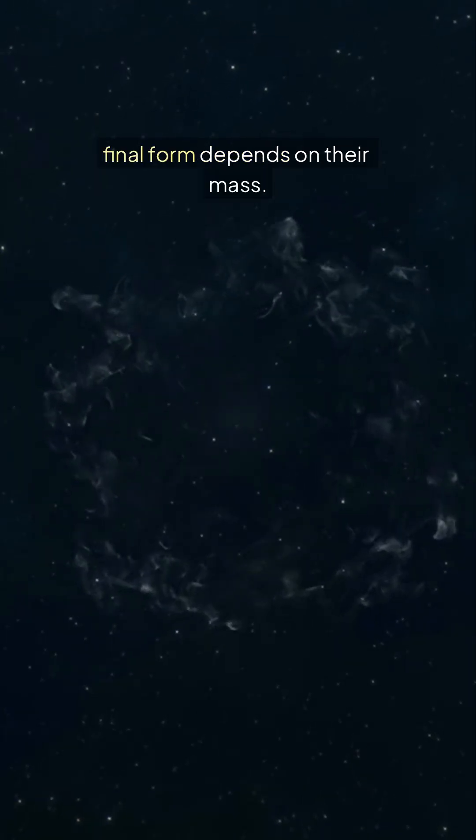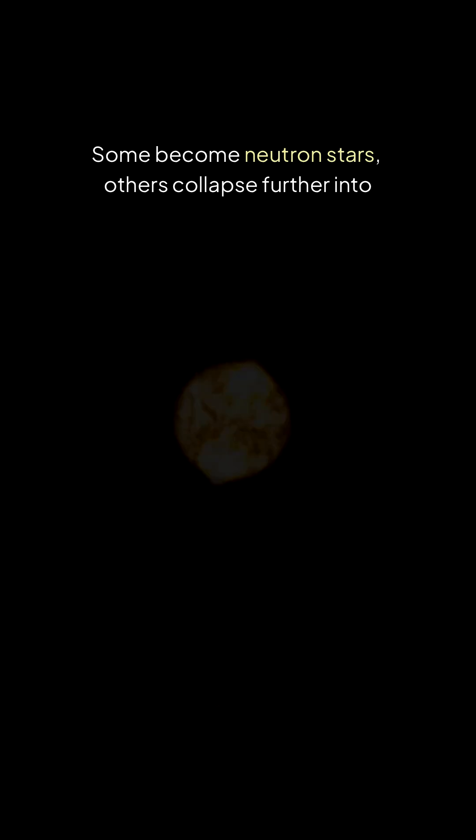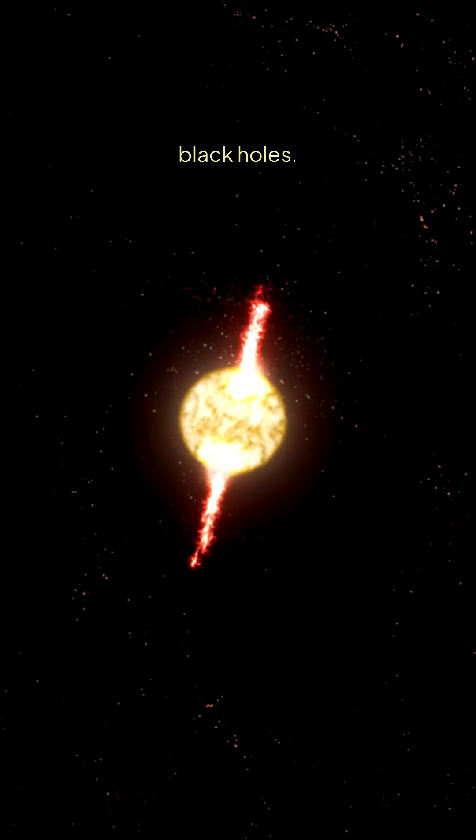When massive stars die, their final form depends on their mass. Some become neutron stars, others collapse further into black holes.